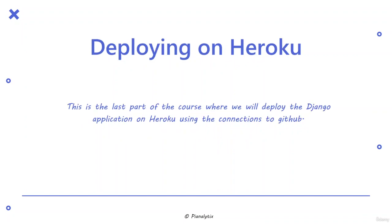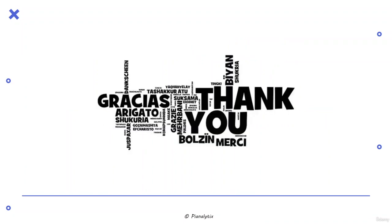The last part of the course is deploying on Heroku. We will deploy the Django application on Heroku using the connection to GitHub. Now let's move forward and work on the first part of this project where we will be building a machine learning model.